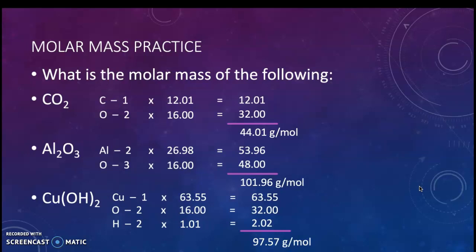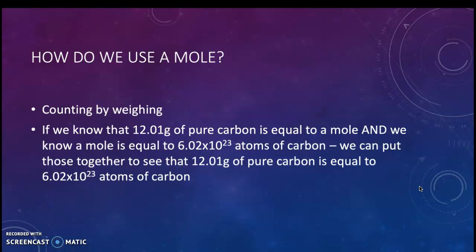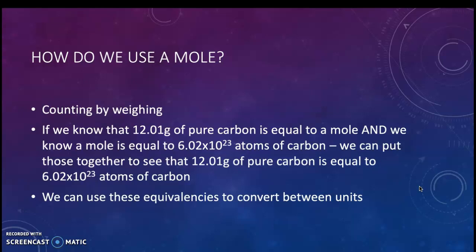Follow the steps: count out your atoms, multiply by the mass from the periodic table, and add all the masses together. So now, how are we going to use that? We are counting by weighing. If we know that 12.01 grams of pure carbon equals one mole, and one mole equals 6.02 times 10 to the 23rd atoms of carbon, we can put those together. We can use those equivalencies to convert between units just like in the dimensional analysis unit.